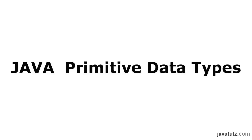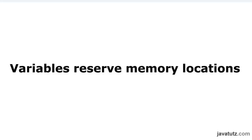When we are coding Java programs, we always use variables. In simple terms, variables reserve memory locations to store values. This means by creating a variable, you are going to tell the Java Virtual Machine to reserve some space from the memory of your computer or the device you use to run the software.